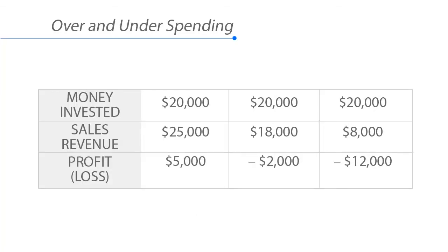Here's an example. If you invest $20,000 and generate sales revenue of $25,000, you've earned a profit of $5,000 — so that's good. If you invest $20,000 and generate sales revenue of $18,000, you've actually lost $2,000. You've generated less money than you invested, so that is a loss of $2,000.